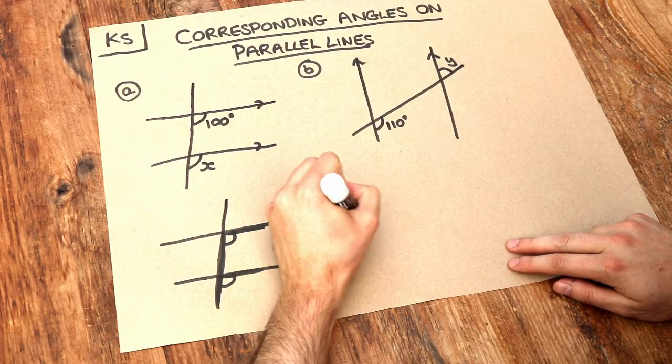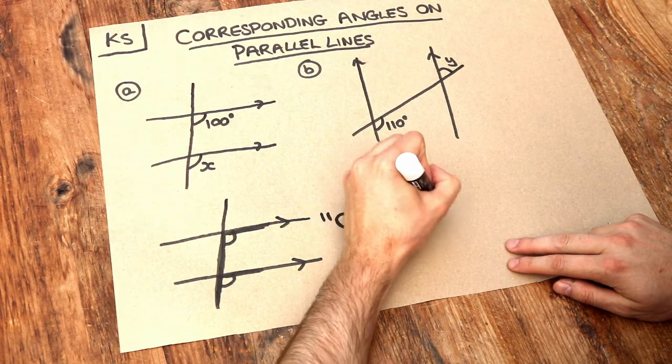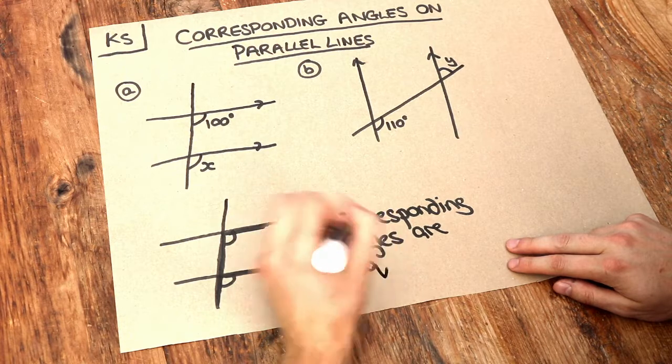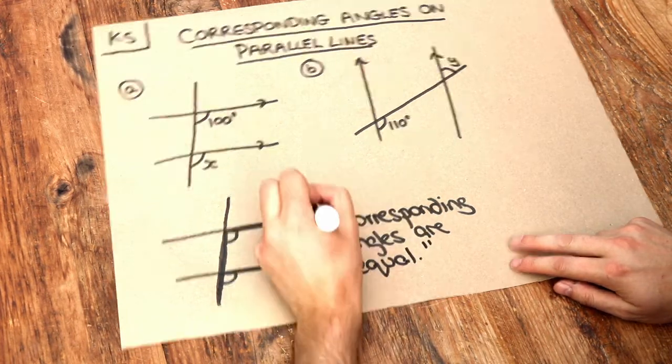And we say, if we need to justify our angle in an exam, that corresponding angles are equal. They're sometimes called F angles because of this F shape, but you should never write that in an exam.